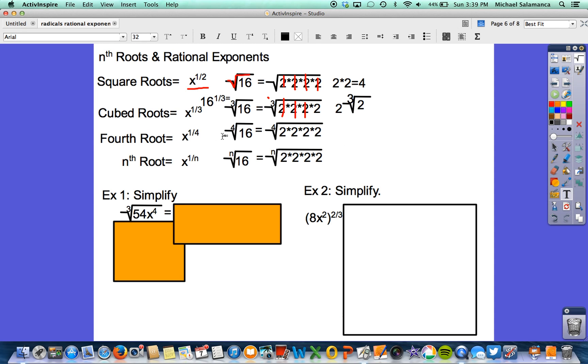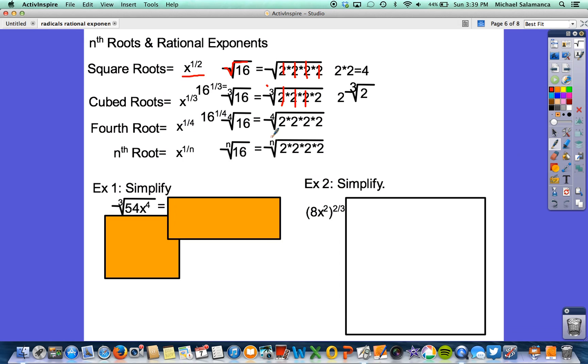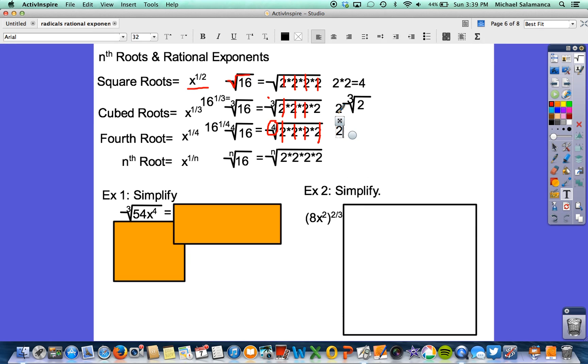Fourth root, again, fourth root of 16 is the same thing as saying 16 to the one-fourth power. And we can simplify this. Again, because it's a 4 out here, we need 4 items. So we need to be able to cross out four things. So 1, 2, 3, 4 in order to write down 1 or to get rid of it. There's nothing left in the square root, so we don't need to rewrite it.